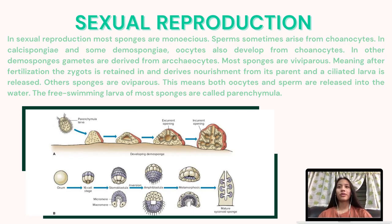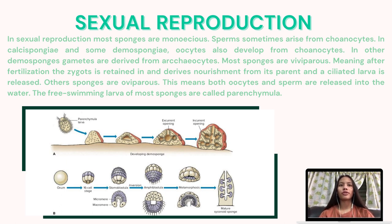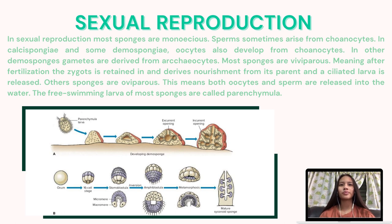We will now be talking about sexual reproduction. In sexual reproduction, most sponges are monoecious. Sperm sometimes arise from choanocytes. In Calcispongiae and some Demospongiae, oocytes also develop from choanocytes. In other demosponges, gametes are derived from archaeocytes. Most sponges are viviparous, meaning after fertilization, the zygote is retained in and derives nourishment from its parent, and the ciliated larva is released. Other sponges are oviparous, meaning both oocytes and sperm are released into the water. The free-swimming larvae of most sponges are called parenchymula.